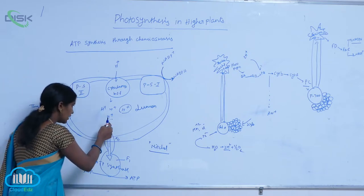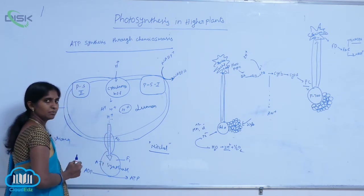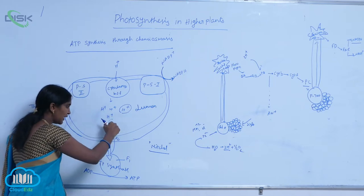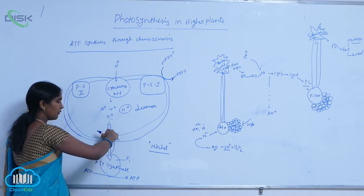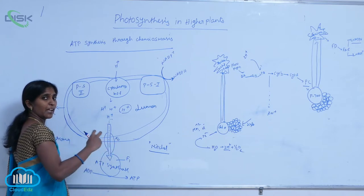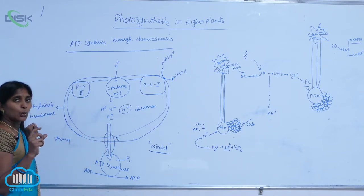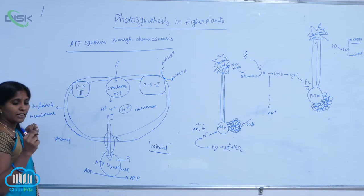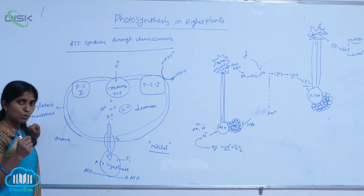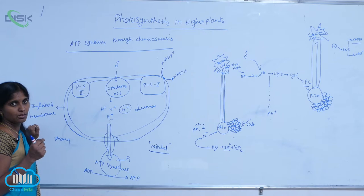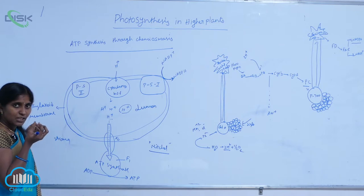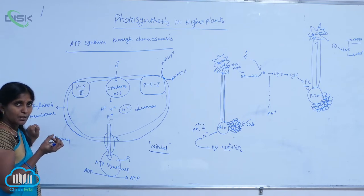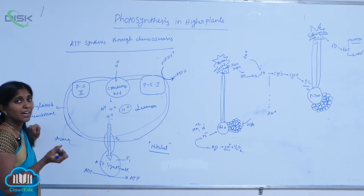Through the F0 channel, protons enter the stroma. When they fall onto the F1 particle, the F1 particle works as a rotatory particle — it is one of the smallest rotatory particles in the world. While rotating, it releases some force, which is taken up by the ATPase enzyme, promoting ATPase enzyme activation.